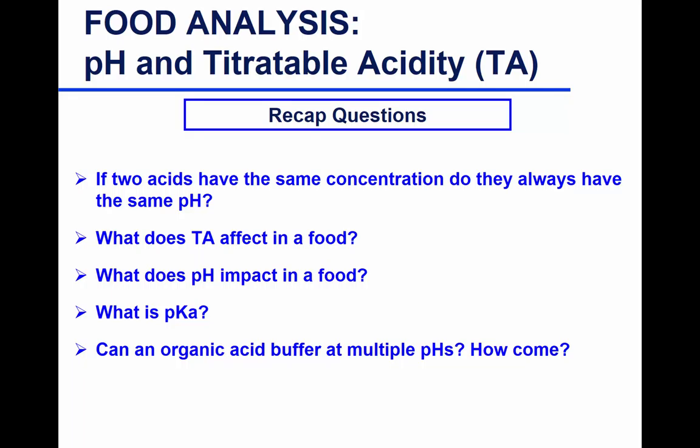What is pKa? pKa is the pH at which you have equal concentrations of dissociated acid and non-dissociated acid — that's when you have maximum buffering capacity. Can an organic acid buffer at multiple pHs? Yes. Why? Different compounds have different numbers of carboxyl groups. If you have citric acid, you have three carboxyl groups, so it will have three pKa values and will buffer at three different pHs. Acetic acid has one carboxyl group, so it has one pKa and buffers at one pH.